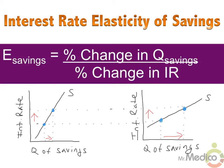Next, let's look at the elasticity of savings to link up responsiveness to financial capital markets. In economics, more savings is good for an economy because it will lead to more investment in capital goods and economic growth over the long run. More savings is also good for an individual looking to grow their household wealth. The interest rate elasticity of savings measures how responsive savers are to a change in interest rates. The formula is the percent change in the quantity of savings divided by the percent change in the interest rate.